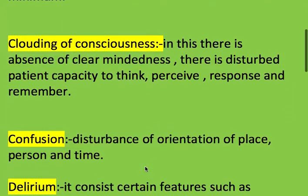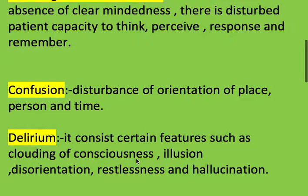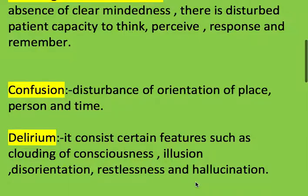The next disorder is confusion. Confusion means a disturbance of orientation of place, person, and time. That type of person cannot orient themselves to the place where they are staying, to people, or to time.